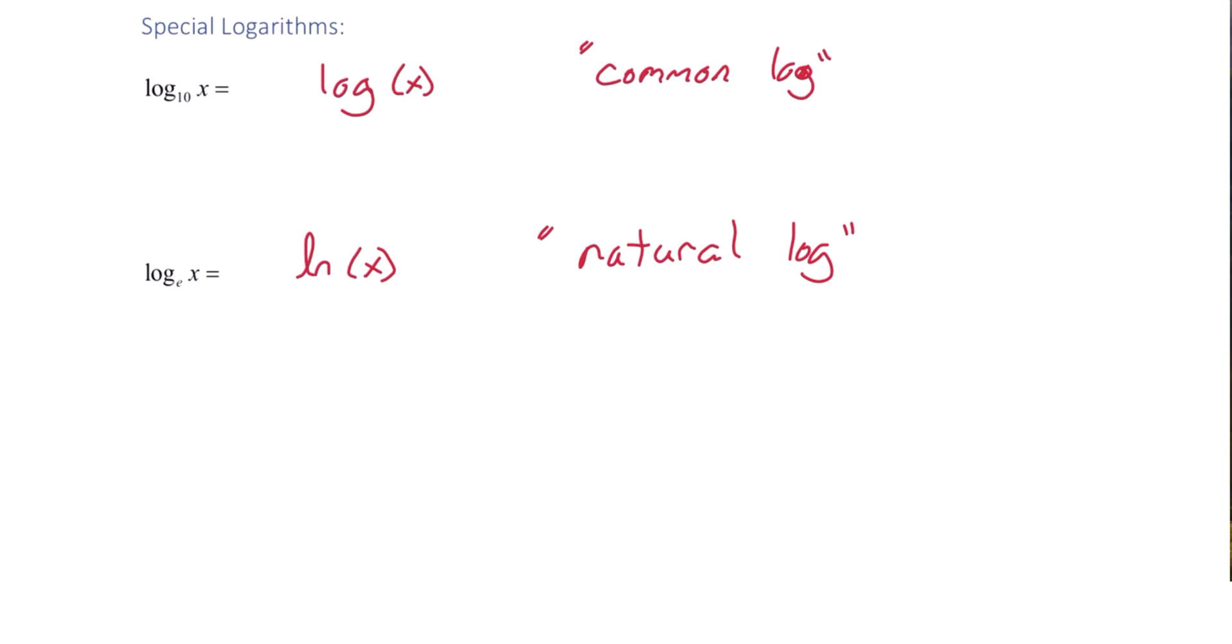And e, recall, is a number similar to pi. It's just an irrational number that comes up a lot in math. e is roughly 2.718 and that continues long decimal. You don't have to have e memorized. Just know that the natural log has the base of e.